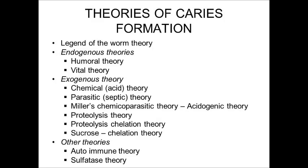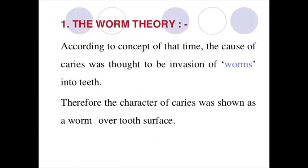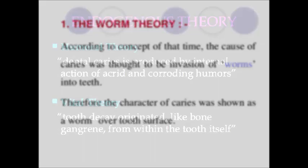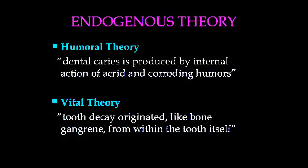The first theory is the legend of worm theory. According to this theory, caries is caused by the worm. The second theory is endogenous theory, which includes humoral theory and vital theory. According to humoral theory, dental caries is produced by internal action of acrid and corroding humors. And in vital theory, tooth decay originated like bone gangrene from within the tooth itself.